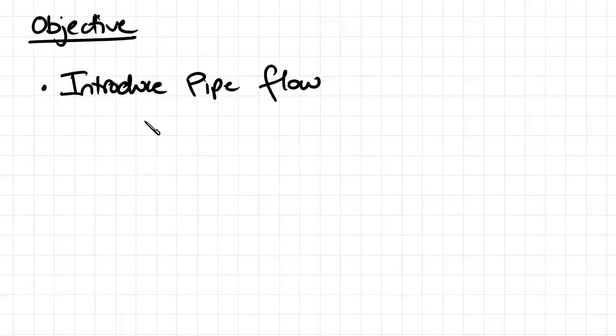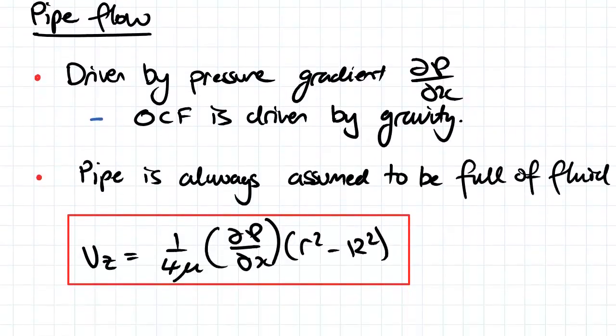The objective for this video is to introduce pipe flow. Pipe flow is essentially driven by a pressure gradient. In comparison, open channel flow is driven by gravity. In pipe flow there may be some force of gravity as well, but the major contributor is the pressure gradient - that's the driving force behind the flow.